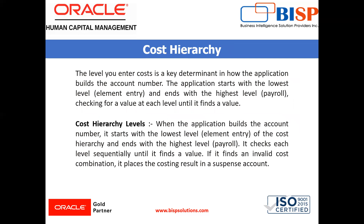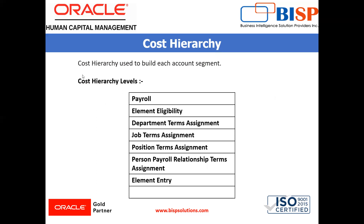Next is the cost hierarchy. The cost hierarchy represents the priority of the different levels where you can enter cost information. The level you enter cost is a key determinant in how the application builds the account number. The application starts with the lowest level of the cost hierarchy and ends with the highest level — payroll. It checks each level sequentially until it finds a value. If it finds an invalid cost combination, it places a costing result in a suspense account.